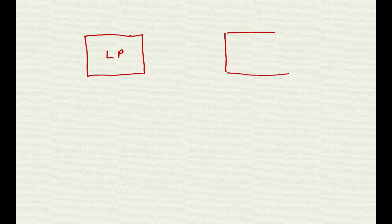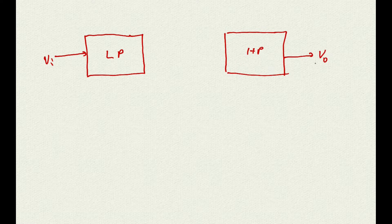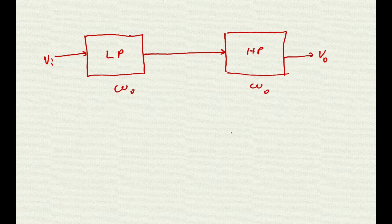Let's walk through a block diagram. Let's start with a block representing a lowpass filter and another one representing a highpass filter. Here is the input of the lowpass filter and here is the output of the highpass filter. The output of the lowpass filter goes directly into the input of the highpass filter. Both lowpass and highpass filters have the same cutoff frequency omega zero.